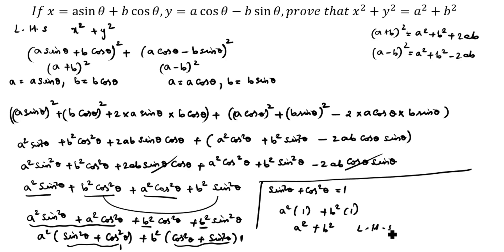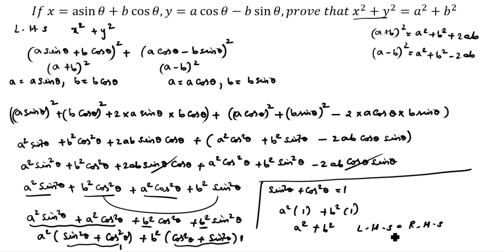LHS equals RHS. You see here x square plus y square is LHS, and a square plus b square is RHS. Hence proved. Thanks for watching this video.